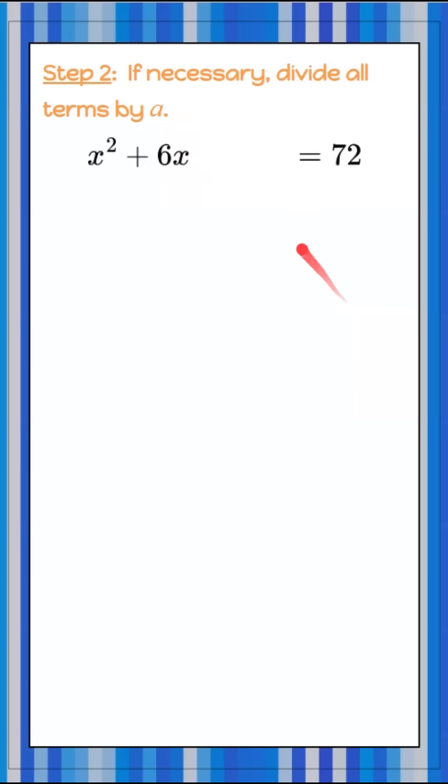Looking at step two, if necessary, we're going to divide all terms by a. Well, a in this instance is 1, so we don't need to divide by 1 because anything divided by 1 is itself.